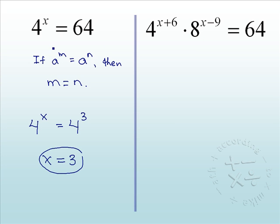Instead, let's treat it like this. We're going to need them all as the same base. The thing is, you can write 64 as a base of 4, but you can't do that with the 8.